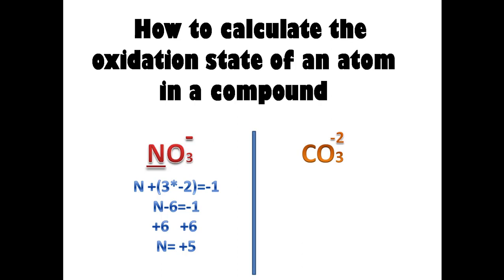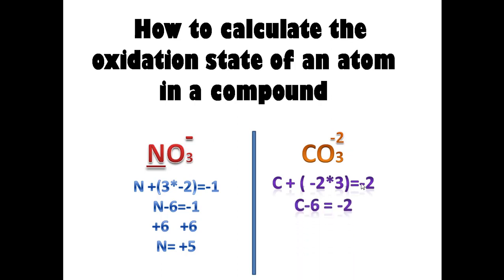Let's calculate the oxidation state of carbon. We have carbon, and we add the oxidation state of three oxygen atoms, multiplying the number of oxygen atoms by the oxidation state of oxygen. That gives us an overall charge of minus two. We do some math and then we find carbon to be positive four.